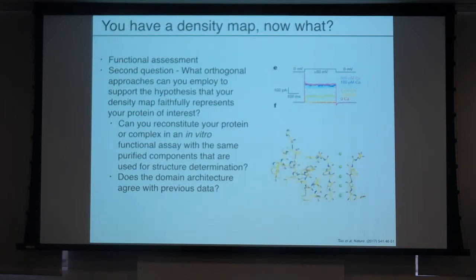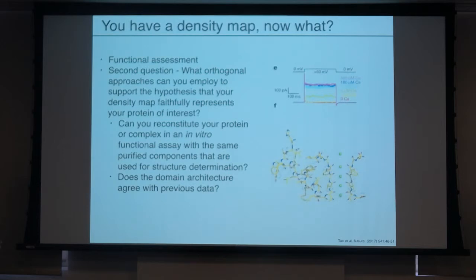Another approach: is there a structure of a related protein, even distantly related, with particular features that very closely align with your density map? That would suggest, through an orthogonal structural approach — maybe an NMR structure or a crystal structure of a smaller domain — that at least part of your domain has the same structure. That gives you more confidence that your density map faithfully represents the protein you're trying to address, and hopefully you can use that to infer information about the question the whole project started with.